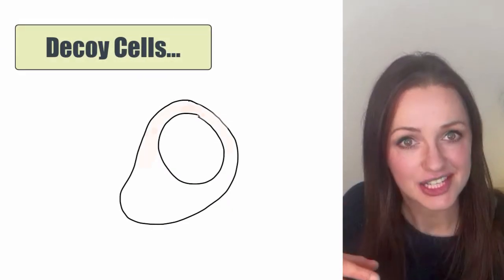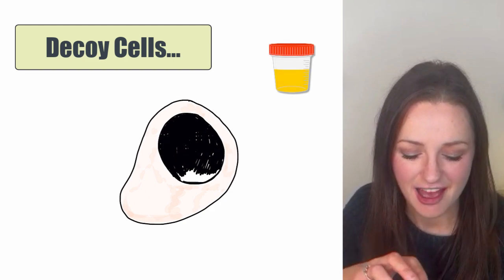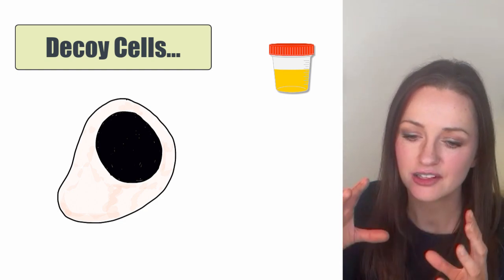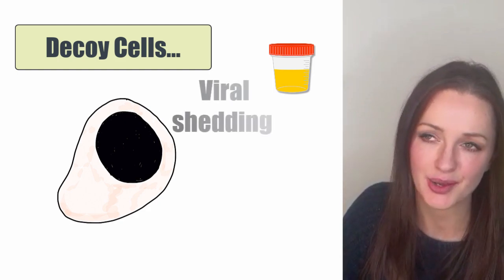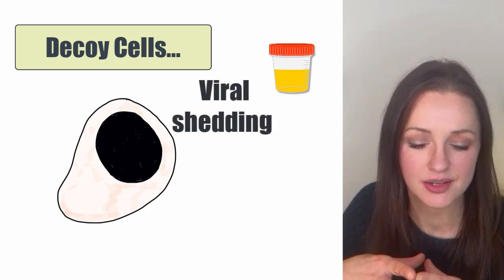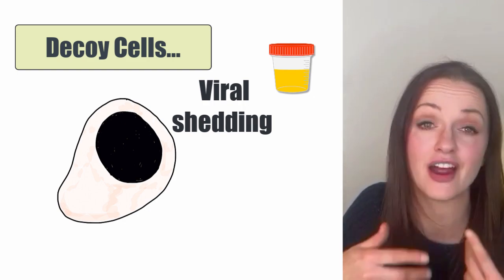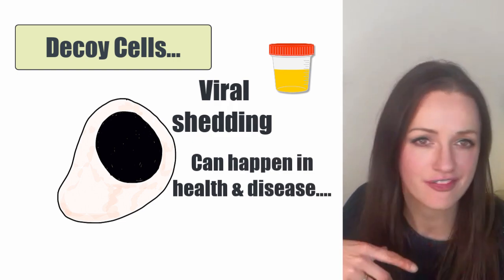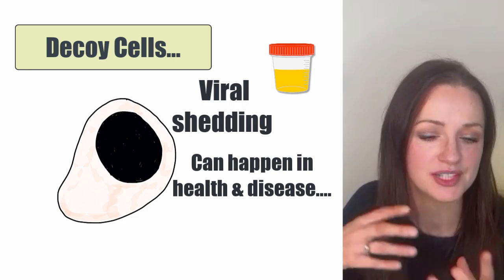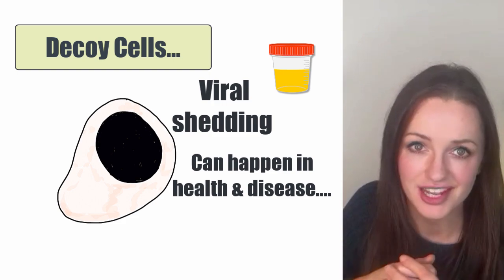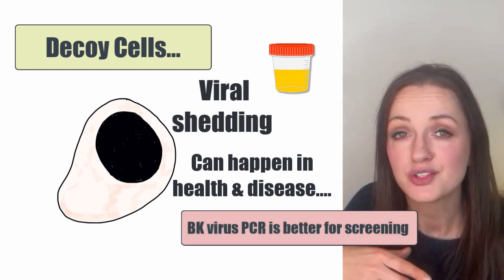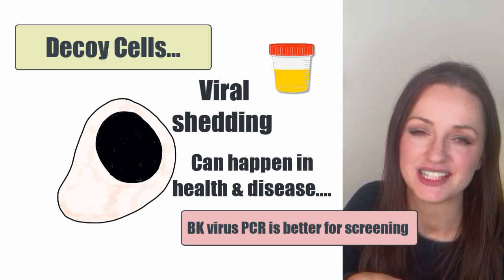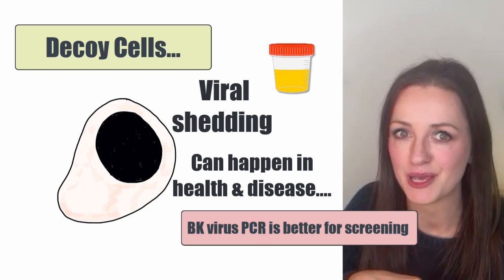Something else worth mentioning is decoy cells — cells on urine cytology with cytopathic changes caused by BK virus, featuring enlarged nuclei that can resemble cancer cells (hence the name). Decoy cells can occur with BK virus shedding, but their presence doesn't necessarily indicate nephropathy or significant viremia — even a healthy person can have some viral shedding. Urine cytology is sometimes used as a screening tool in countries where PCR isn't accessible, but where BK virus PCRs are available, that's the superior monitoring method.